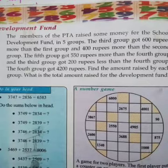Let us go to today's second activity. Take your text to page number 54. Development Fund. The members of the PTA raised some money for the school development fund in 5 groups. The third group got 600 rupees more than the first group and 400 rupees more than the second group. The fifth group got 550 rupees more than the fourth group and the third group got 200 rupees less than the fourth group. The fourth group got 4200 rupees. Find the amount raised by each group. What is the total amount raised for the development fund?